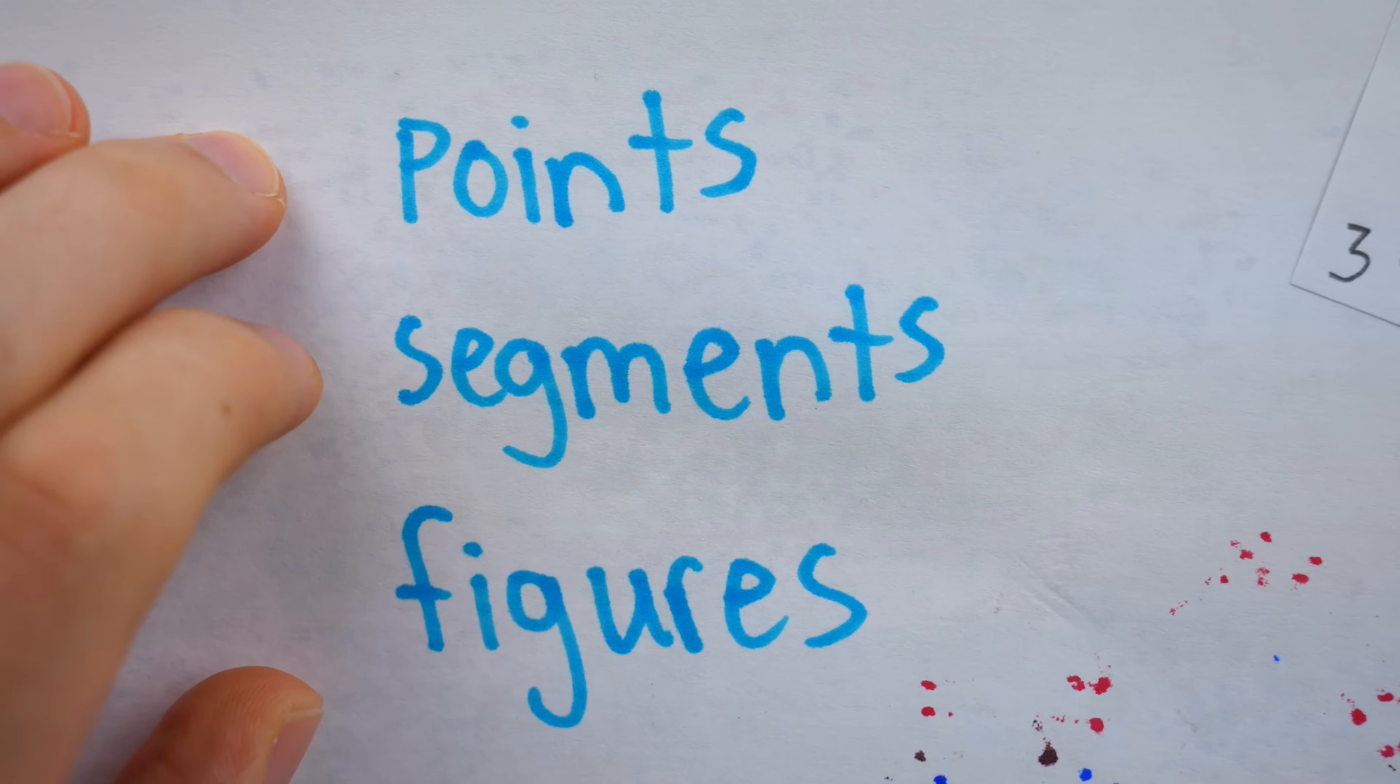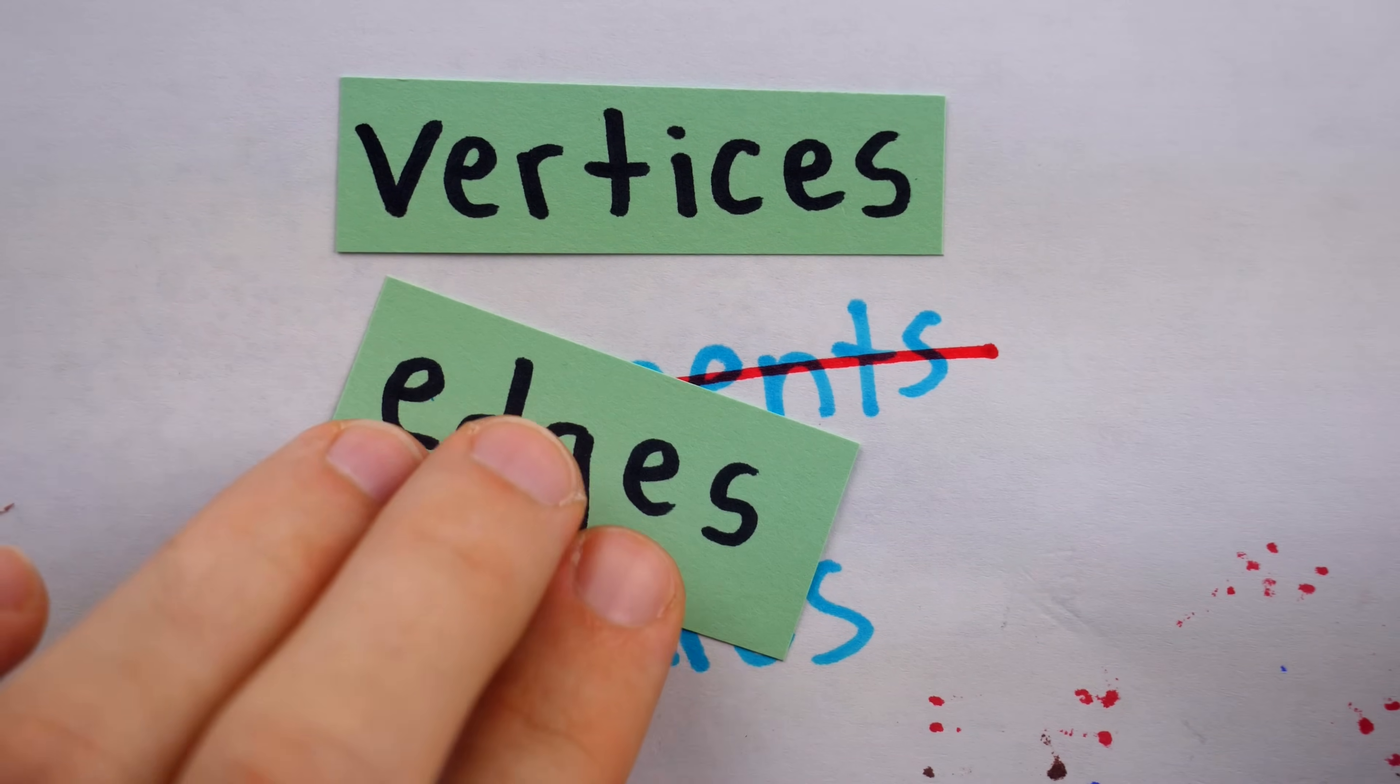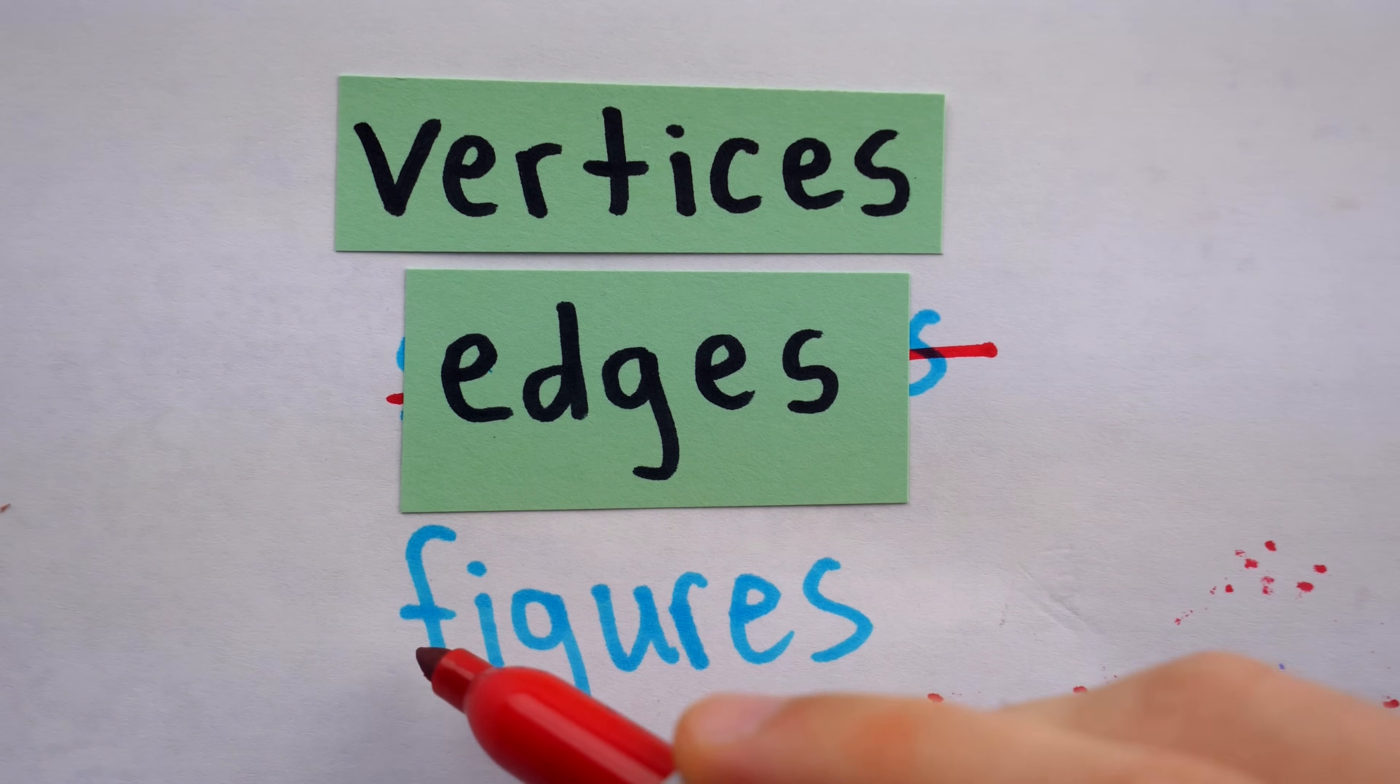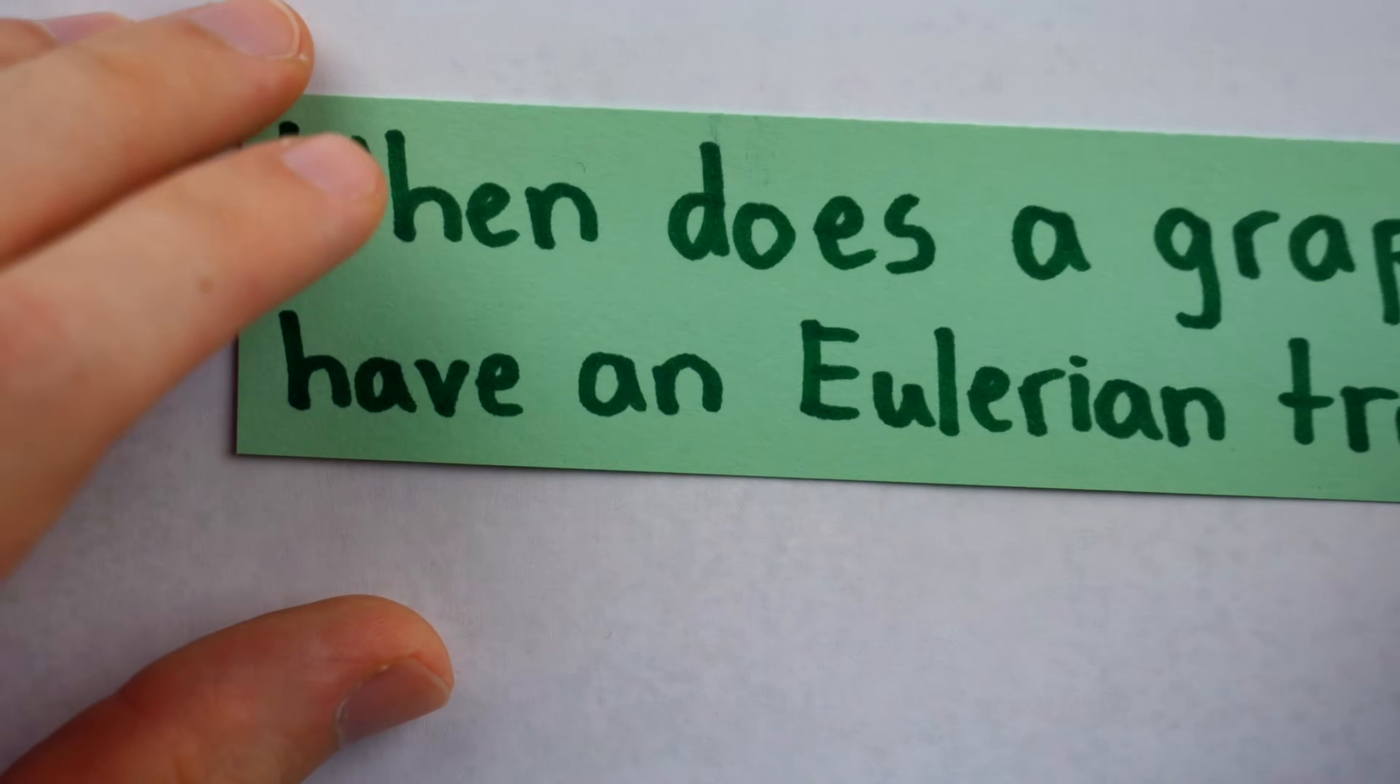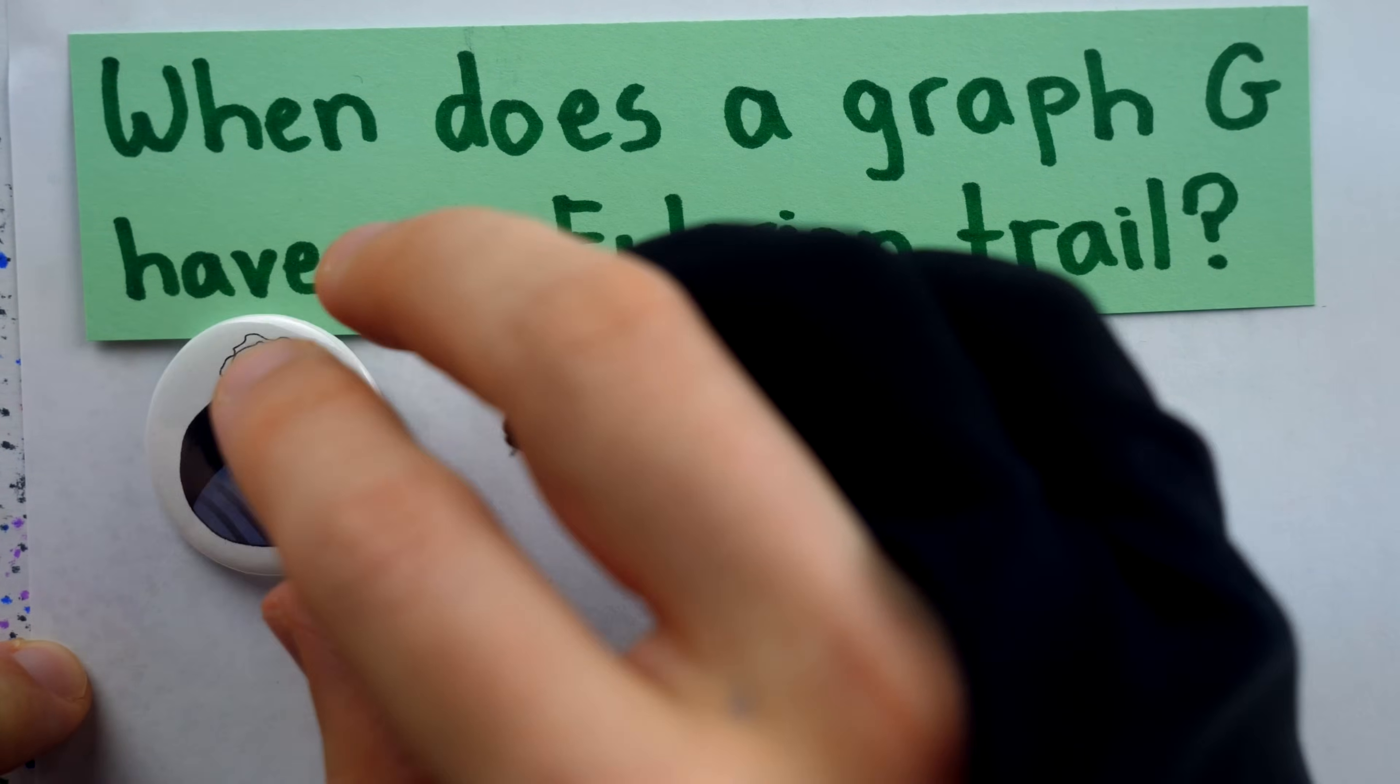These points of intersection, like we said, are not points. They are called vertices. And these segments that join pairs of points are not called segments. They are called edges. And these drawings or figures of vertices that are joined by edges are not called figures. They are called graphs. And the tracing challenge we've been discussing is not some cute internet challenge. It is the question of when a graph has an Eulerian trail. These, of course, are named after legendary mathematician Leonard Euler.